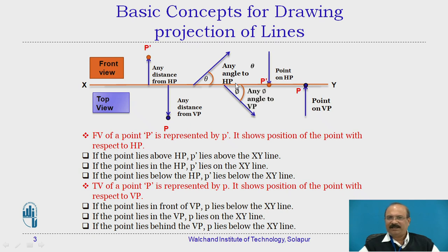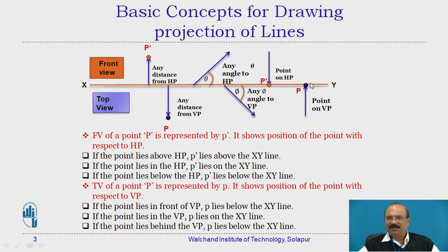We have represented only one direction, but you can take it in both directions. Now, if a point is situated above the horizontal reference plane and in front of the vertical plane — if the point is on the horizontal plane itself, this distance becomes zero, meaning the point is situated on the XY line, represented as P'. Similarly, if a point lies in the vertical reference plane, it touches the XY line from below, that distance becomes zero, and the point is represented as P.